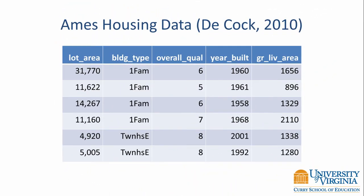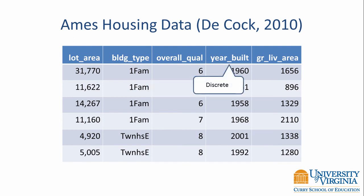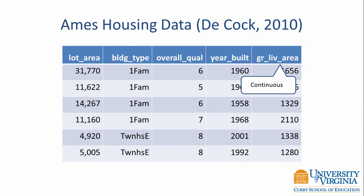Let's look back at the Ames housing data and determine whether each variable is continuous or discrete. Lot area is a continuous variable. Building type is a discrete variable. Overall quality is also a discrete variable. The year the dwelling was built is discrete. And finally, the square footage is a continuous variable.